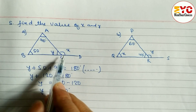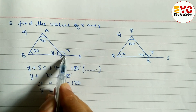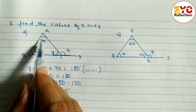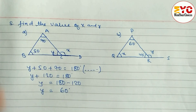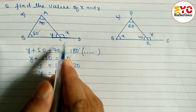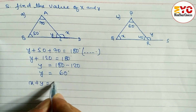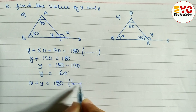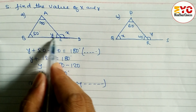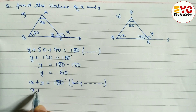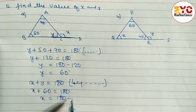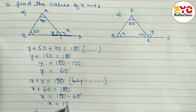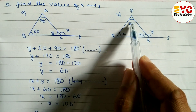Now we have to find out the value of X also. We can write X plus y is equal to 180 degrees, being a straight angle. Or you can write X is equal to 70 plus 50, since the exterior angle is equal to the sum of two opposite interior angles. X plus y is equal to 180 degrees — being supplementary angles or being a straight line. X plus 60 is equal to 180, so X is equal to 180 minus 60, therefore the value of X is equal to 120 degrees.